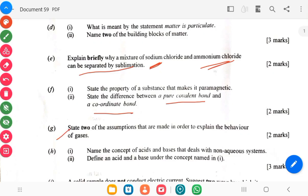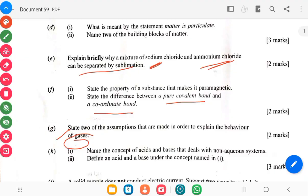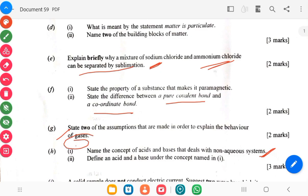Then the G says state two assumptions that are made in order to explain the behavior of gases. Then the H, name the concept of acids and bases that deals with non-aqueous systems. Then define an acid and a base under the concept named. What concepts did you mention in I? So define under that concept.